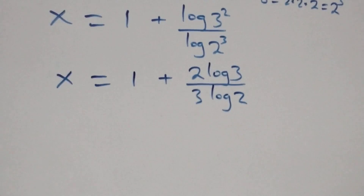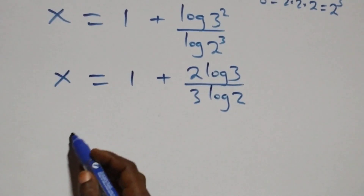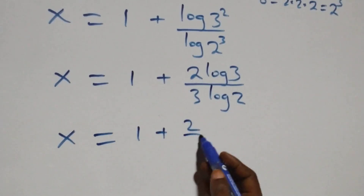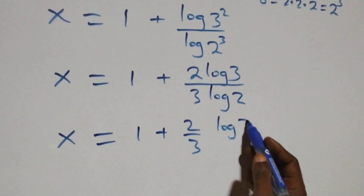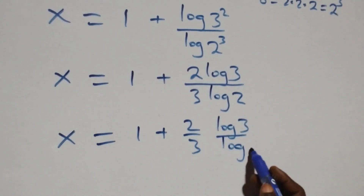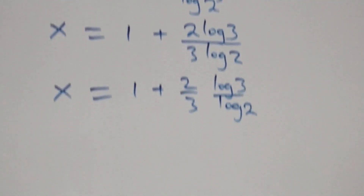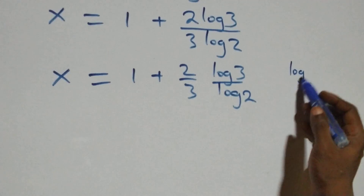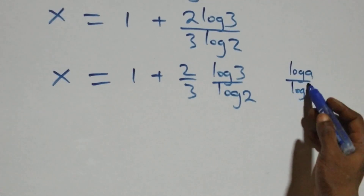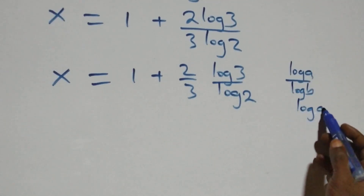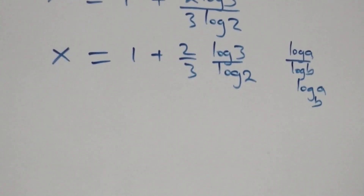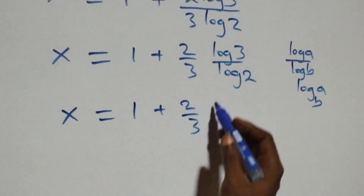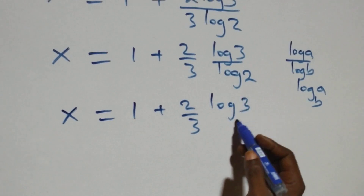From here we can rewrite this as x equals 1 plus (2 over 3) times (log 3 over log 2). We then apply the change of base formula, where log a over log b is the same thing as log a to base b. So what we have becomes x equals 1 plus (2 over 3) times log 3 to base 2.